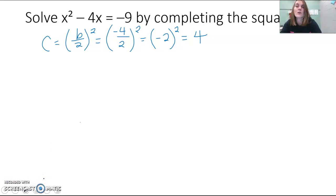So then if we go back to our equation, we would have x squared minus 4x. And you would add 4 in order to make that a perfect square trinomial. And then whatever you do to the left side, you must do to the right side. So we have to add 4 to negative 9 too.